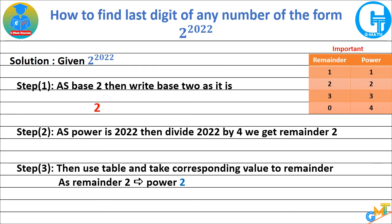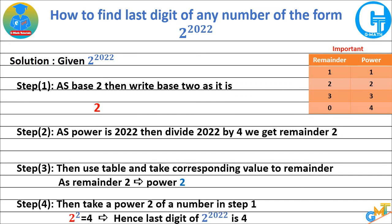From the table, corresponding to remainder 2, take a to the power 2. Use that in step 1: 2 raised to 2 is equal to 4.